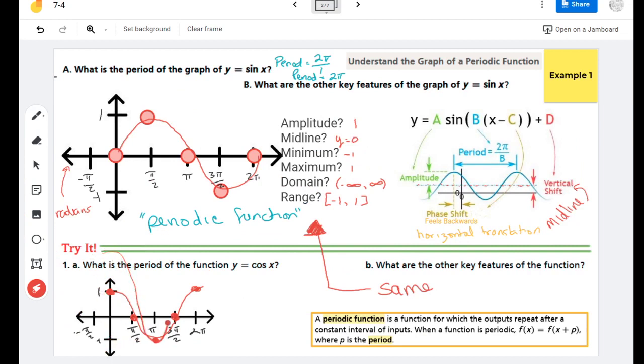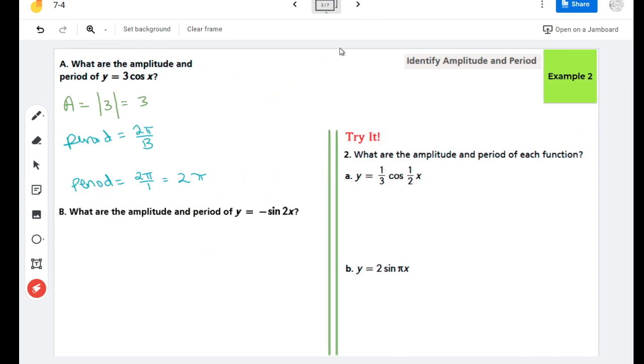Now for part B, we're dealing with a couple of spicy things. When we deal with the amplitude again, we take the absolute value of the expression in front of our trig function, so I'm taking the absolute value of negative 1 here, which is 1. Now what that negative is doing is that negative is flipping our sine graph upside down. It has a job, it's just not included as part of the amplitude.